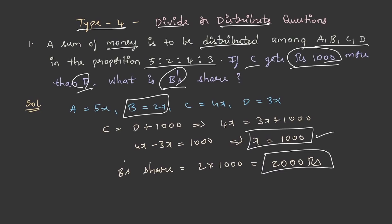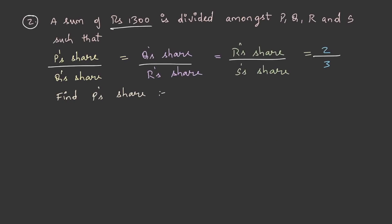Let us solve another question. A sum of rupees 1300 is divided among P, Q, R and S such that P's share by Q's share is equal to Q's share by R's share is equal to R's share by S's share is equal to 2 by 3. Find P's share to solve this. Let us take P as 2x and Q as 3x respectively. Now let us try to understand the value of R and S. We can write Q by R is equal to 2 by 3, isn't it?